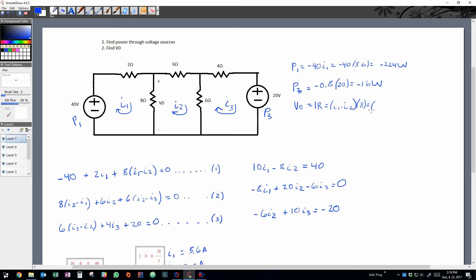So when solving for v0, we actually get 28.8 volts.